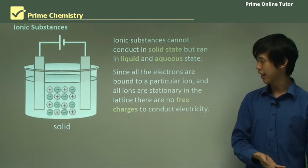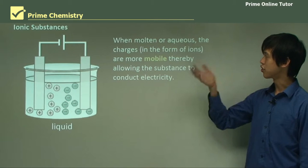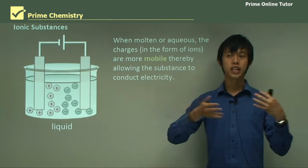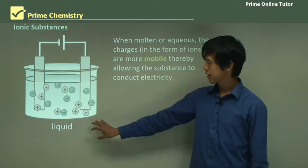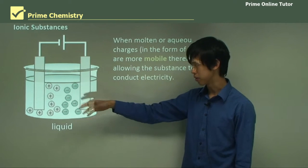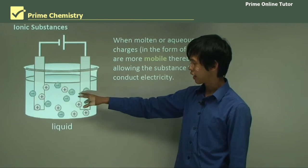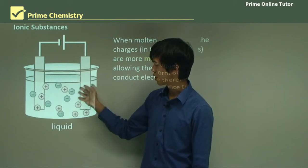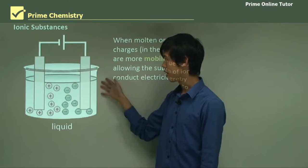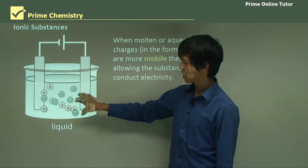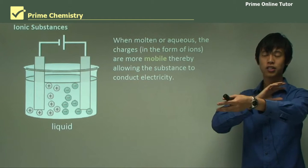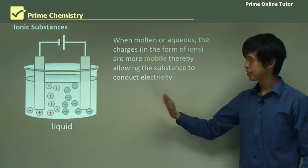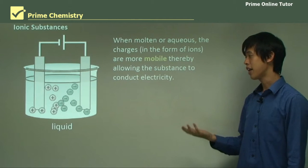In the other case, when ionic substances are molten or aqueous, the charges in ion form are more mobile, and so they can allow the substance to conduct electricity because they can move in a consistent way. You can see they're all scattered in a liquid or aqueous state, and when a charge is applied, they drift to each terminal — positive charges to the negative terminal and negative charges to the positive terminal. That drift of charges in one direction is what we call current.